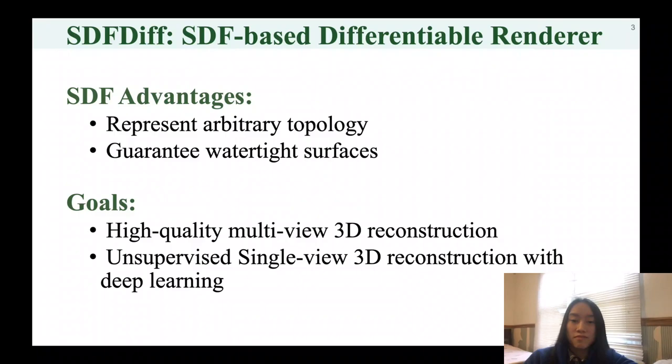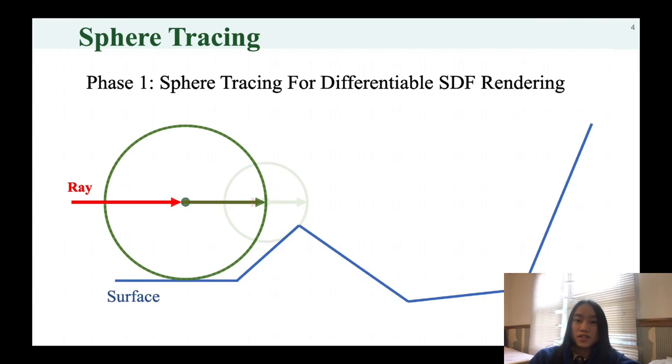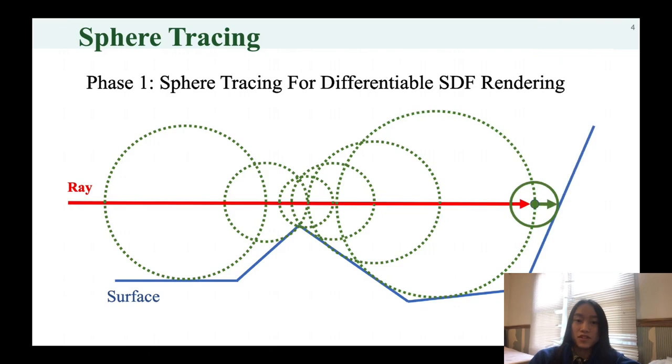We developed a differentiable renderer based on sphere tracing. We use a discrete SDF representation by sampling SDF values on a regular grid, and we apply a standard ray-casting algorithm based on sphere tracing to find the intersection points between rays and the object surface.